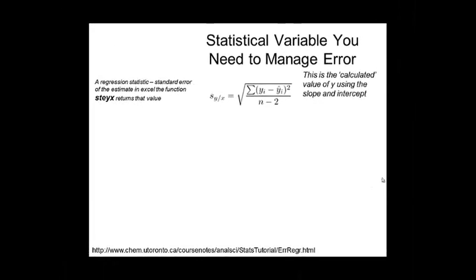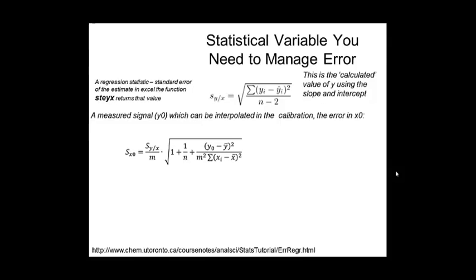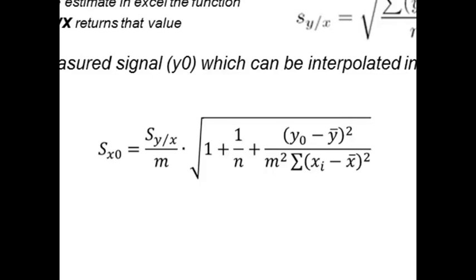Now this isn't the only variable you'll need, but s y x is absolutely essential because it plugs into the equation that you are going to be using to calculate the error on the predicted concentration, or the error on x sub zero. That's simply called s x sub zero, as shown here, and it's the equation that you see here. It's complicated, but you'll be calculating it a lot and you'll get used to it. So let me go through each of the terms.